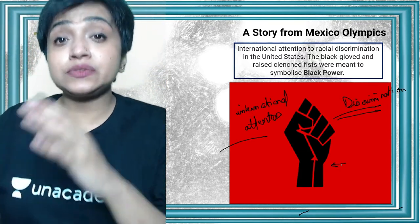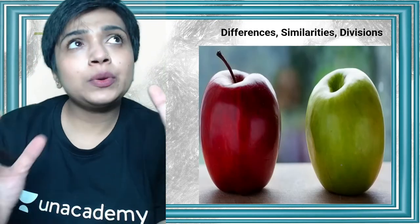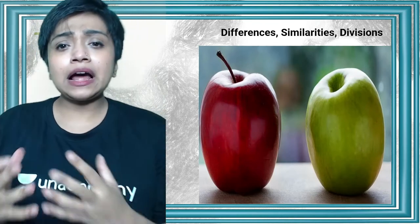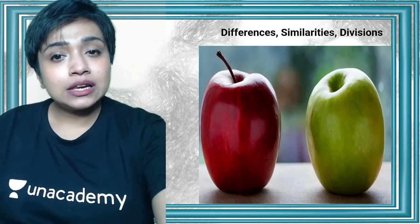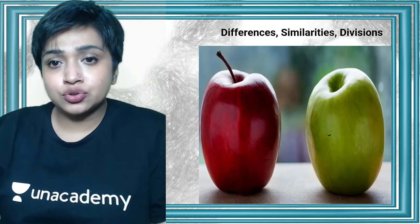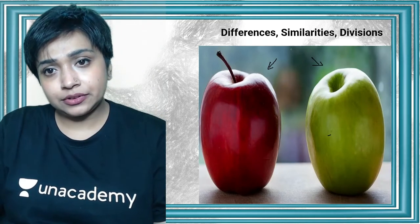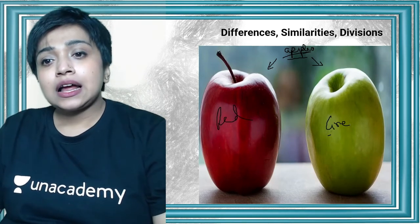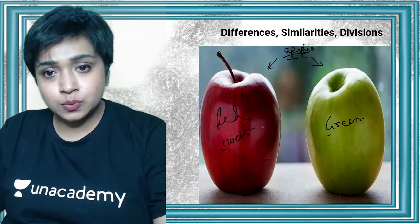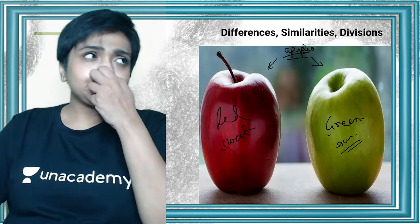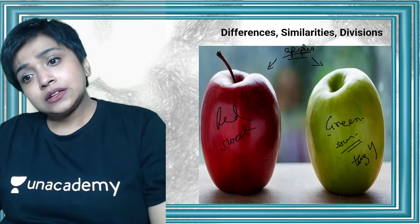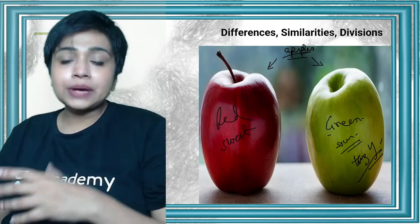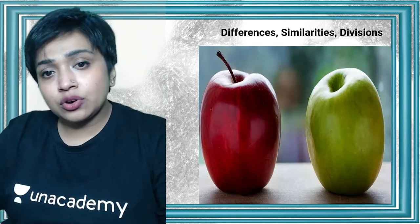What we need to understand is that people are never the same — we are different from one another. I have purposely added a picture of two apples to make this clear. Both are apples, but are they the same? No. One is a red apple, one is a green apple, and probably the taste differs too — one might be sweeter, one more sour or tangy. So even if we are the same to some extent, there are differences. This is the same for human beings as well.